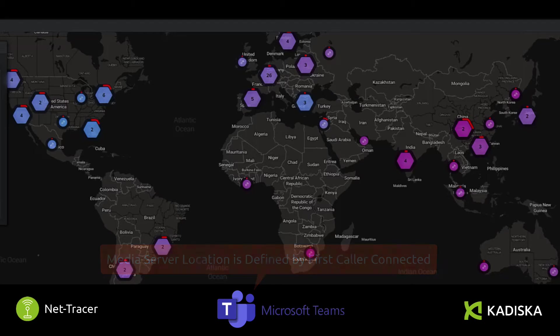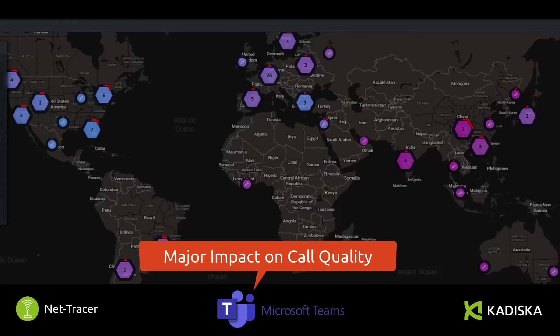For example, if you are based in Europe and you have a call with colleagues living in the US, if you are the first to connect to the Microsoft Teams session, you will connect to a local Media Server located in Europe. All your colleagues will connect to the same server, which is far away from them in this case. This will obviously add network latency and can lead to poor voice and video quality for these US-based users.